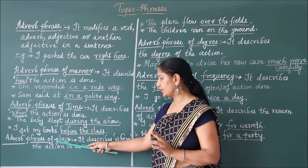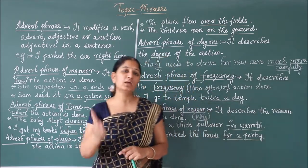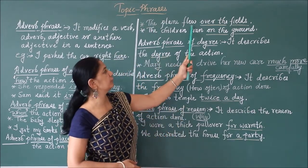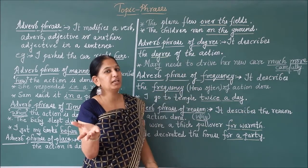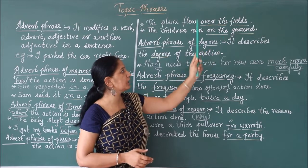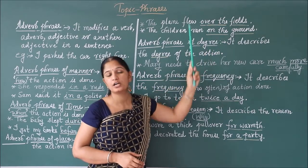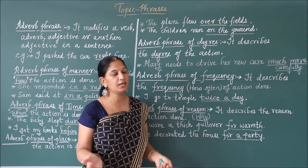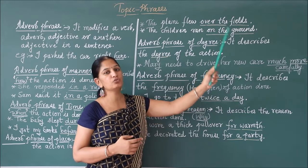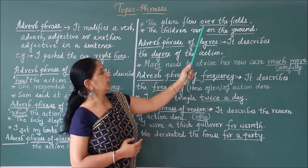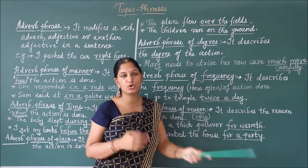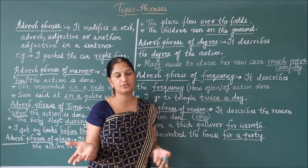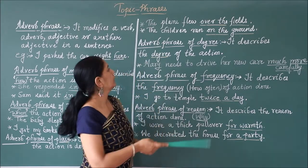Next is adverb phrase of place — it describes where the action is done, answering the question of where. For example: 'The plane flew over the fields.' Where did the plane fly? Over the fields. So 'over the fields' becomes an adverb phrase of place. Another example: 'The children ran on the ground.' Where did the children run? On the ground. So 'on the ground' is an adverb phrase of place because it describes where the action is done.